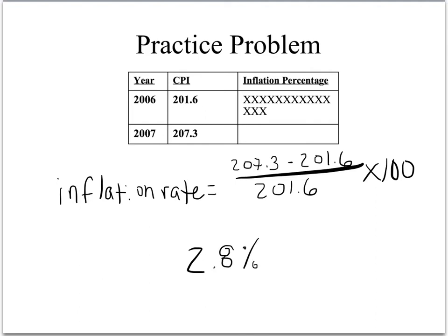One major problem students encounter is typing one long chain into the calculator: 207.3 minus 201.6 divided by 201.6 times 100, and hitting enter. The problem is you may need to put in parentheses in order to make this equation work as one long equation — you'll need two sets of parentheses to do that.